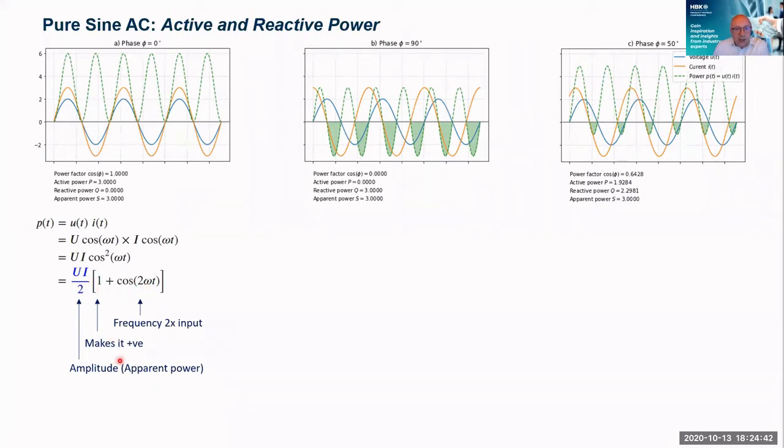This 1+, that's the bit that makes all of this power positive. And this UI/2, that's the amplitude or the apparent power.